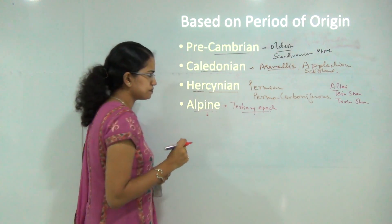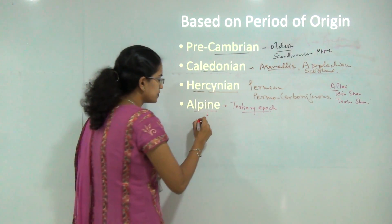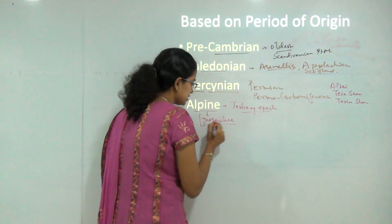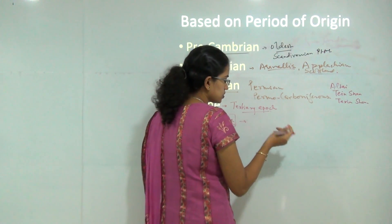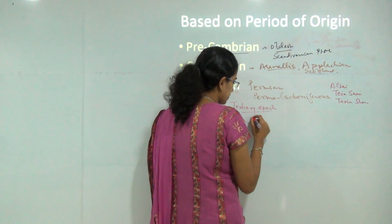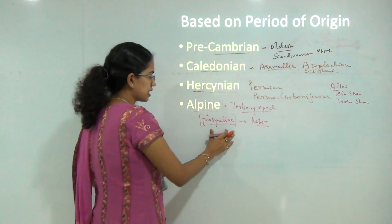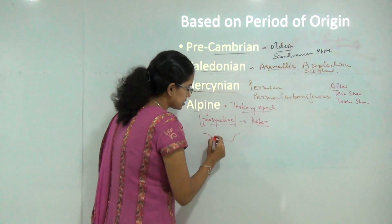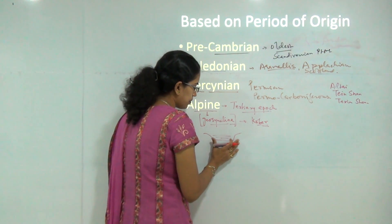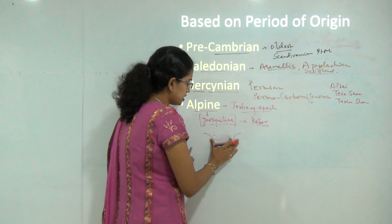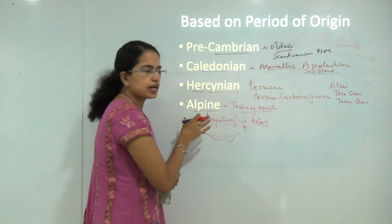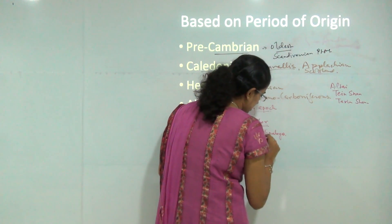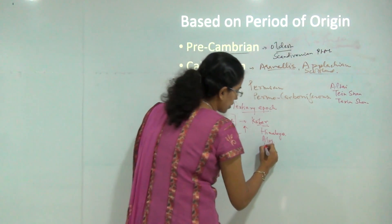Under the Alpine period, most mountains are the result of upliftment of geosynclines. The concept of geosynclines will be covered in a separate session and is also useful for understanding the geosyncline origin theory given by Kober. A geosyncline is a mass of crustal material that is depressed, filled with sediment or water, and mobile in nature. The upliftment of this mass is considered under the Alpine period, with examples including the Himalayas, Alps, Rockies, and Andes.